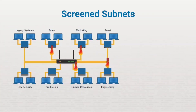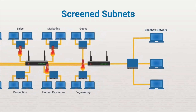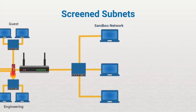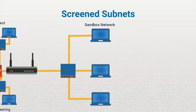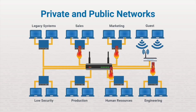Another benefit of using network segmentation is the ability to create a sandbox network — one that's isolated from the normal production network. This is where you can test products without impacting your day-to-day network communications. For example, you might want to create a sandbox network where you can install and test operating system updates before you roll them out to the main system. You can also use network segmentation to create separate private and public networks, using a network access control system to place employees' personal wireless devices on a guest wireless network that's isolated from your production network. This allows them to use the company's wireless network to access the internet, but prevents them from downloading sensitive company data to their personal devices.